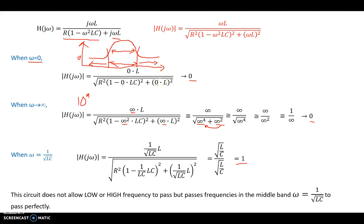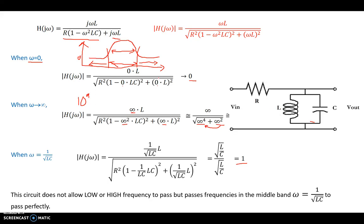This circuit doesn't allow high or low frequencies to pass, but ω = 1/√(LC) passes perfectly, giving a band-pass response. This is called a bandpass filter. One practical use: FM radio. When you tune to a particular frequency, you receive only the station at that frequency — all other frequency channels are blocked. That's a real-world example of a bandpass filter in action.